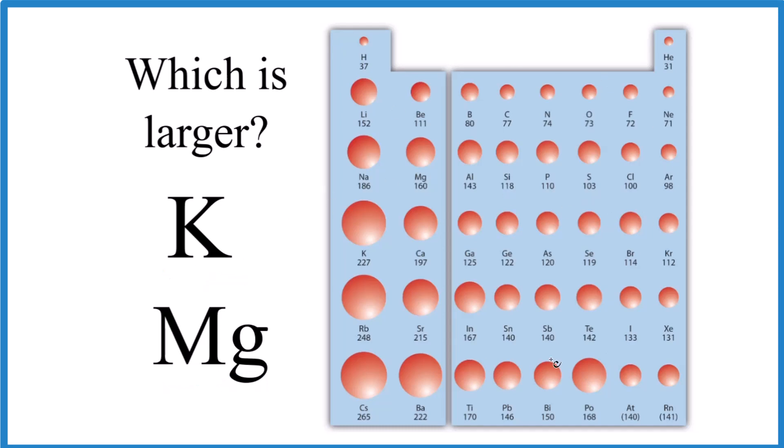We have the periodic table here, and we've condensed it. We've taken out the transition metals, though they follow the same trends. Let's find potassium and then magnesium. Right here is potassium in group 1. In group 2, we have magnesium. You can see the trend for atomic size on the periodic table.